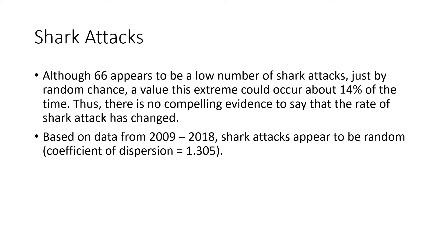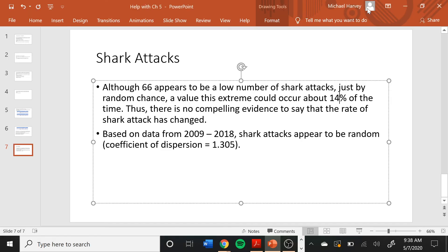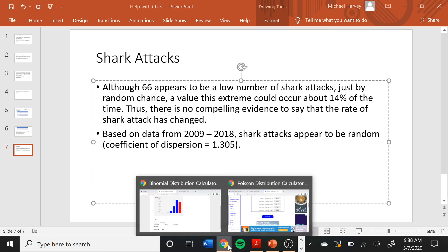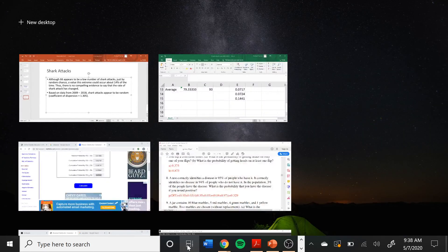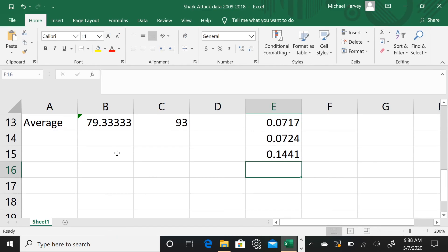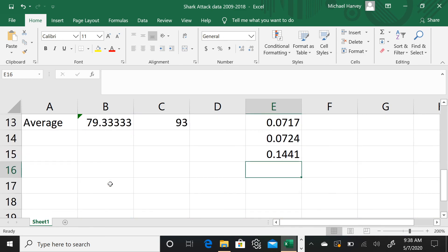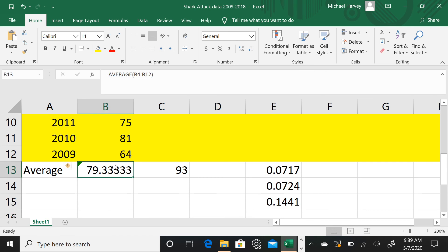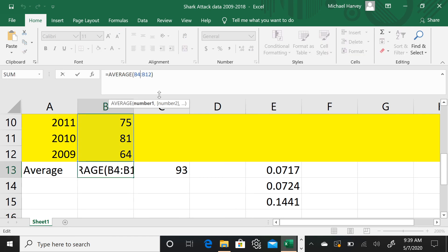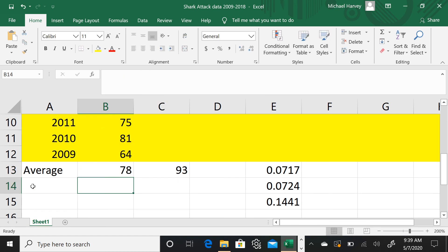Now, if that combined probability had been really low — like 5% or lower — then the media would have a case: they could say yes, something has happened to the shark population. Another question I asked about the shark data is whether it's aggregated or clumped. To answer this we're going to use all the data from 2018 all the way back to 2009.